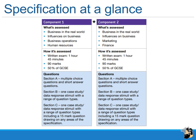Specification at a glance: there are Component 1 and Component 2 — paper one and paper two. You'll notice that Business in the Real World appears in both components, and Influences on Business is also on both. The main distinction between the two papers is the last two bullet points: Component 1 has Business Operations and Human Resources, while Component 2 has Marketing and Finance. Everything else is the same, with 50% on each.